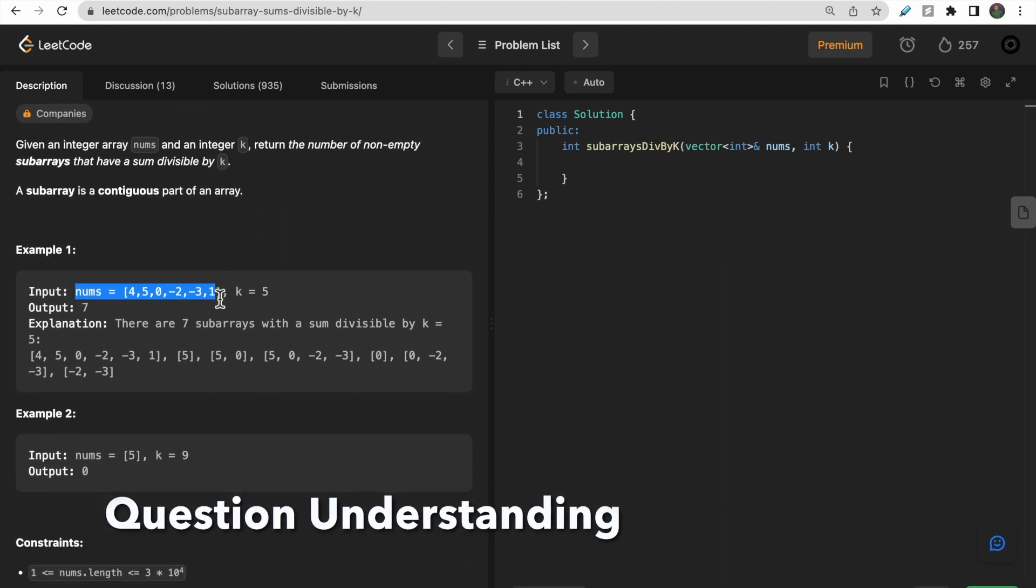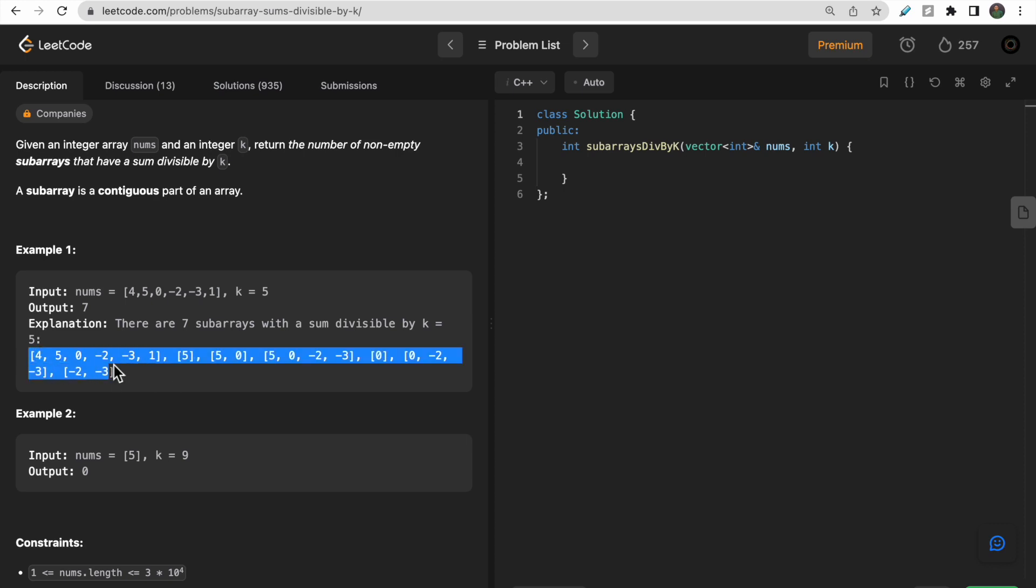Let's take a look at the first test case. Here we are given this nums array containing 4, 5, 0, -2, -3, 1 and k is 5. So we need to find number of subarrays whose sum is divisible by k. This is the first subarray where the total sum is 5 plus 4, 9, -2, that is 7, -3 is 4 and plus 1 is 5.